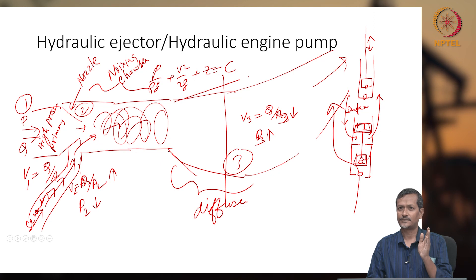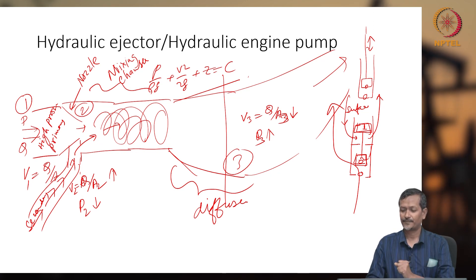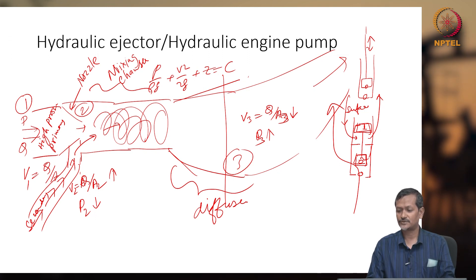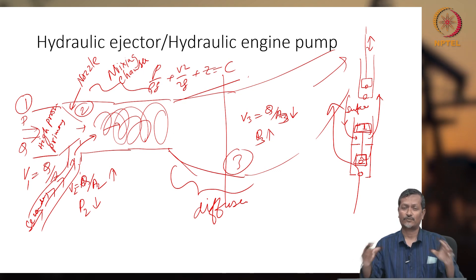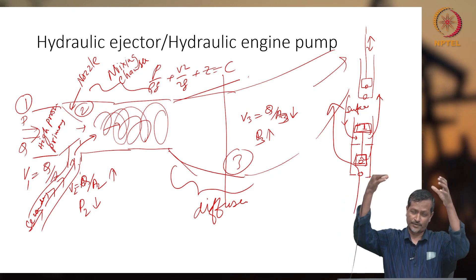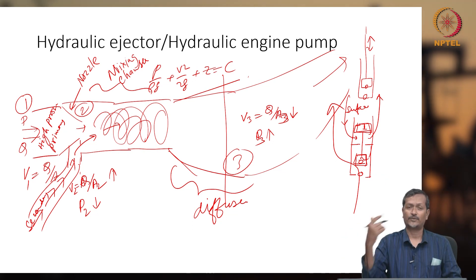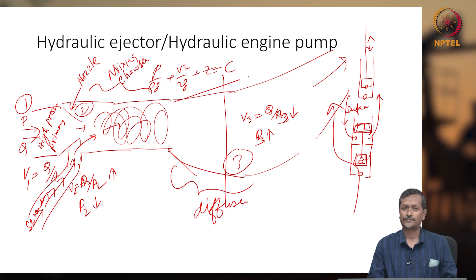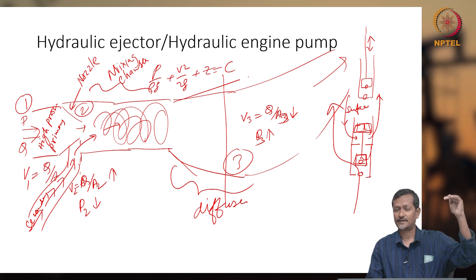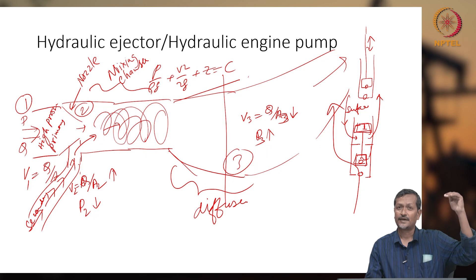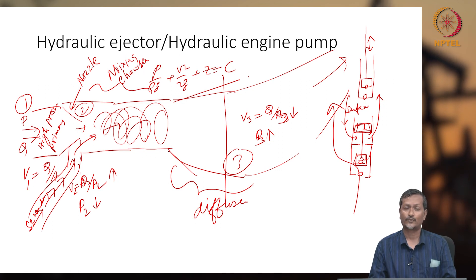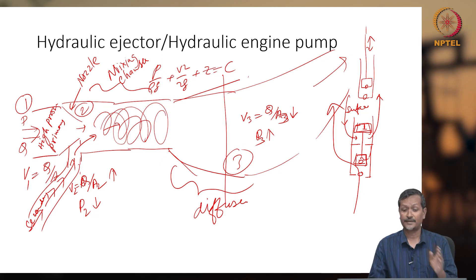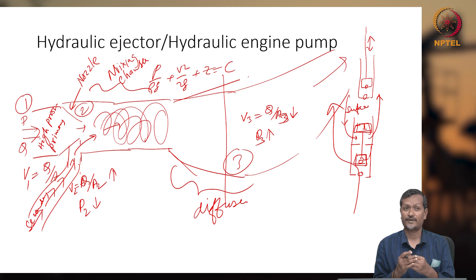The bottom piston sucks wellbore fluid and delivers it to the surface. This concept is called a hydraulic engine pump. It is not very commonly used, but it is a valid principle. The hydraulic jet pump, however, is very commonly used in different applications including medical applications. In both cases you need a surface pumping unit to create the high pressure that travels through tubing and casing annulus to lift fluid.